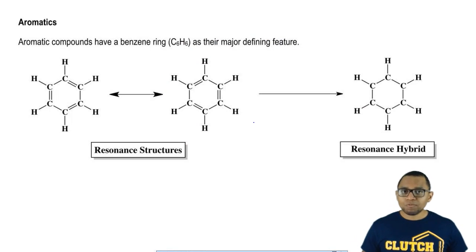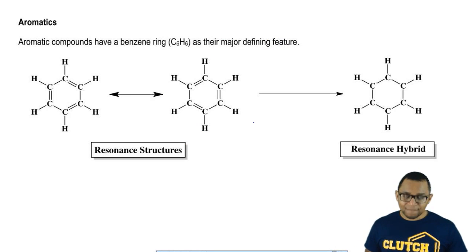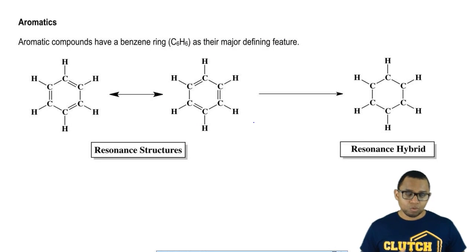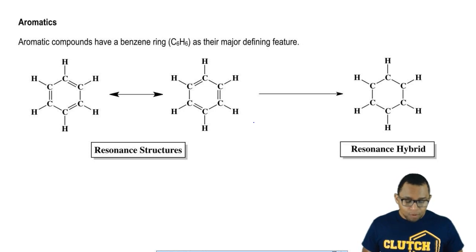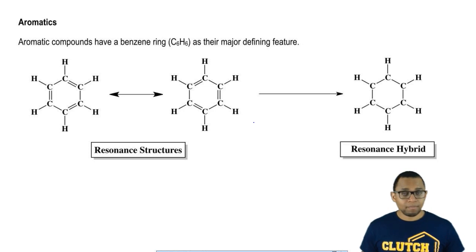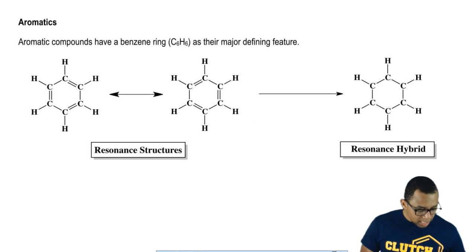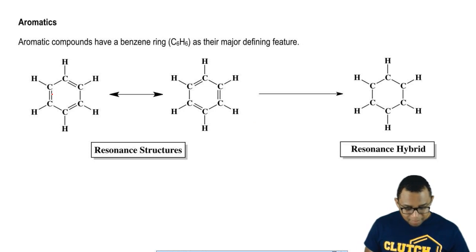A benzene ring is C6H6, because every corner and edge is a carbon, as displayed here. You can draw the double bonds in a few different ways — for example, with double bonds here, here, and here.